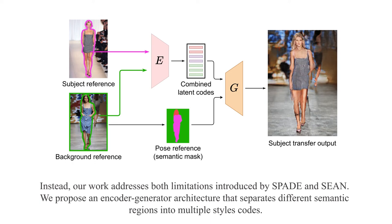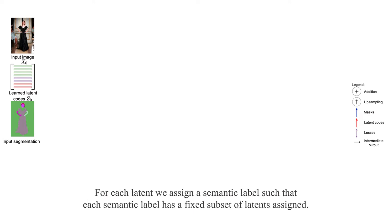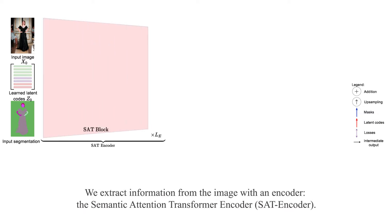Instead, our work addresses both limitations introduced by SPADE and SYN. We propose an encoder-generator architecture that separates different semantic regions into multiple style codes. We begin with an image to encode, a fixed set of latent codes, and a semantic mask associated to the image. For each latent, we assign a semantic label such that each semantic label has a fixed subset of latents assigned. We extract information from the image with our encoder, the semantic attention transformer encoder.